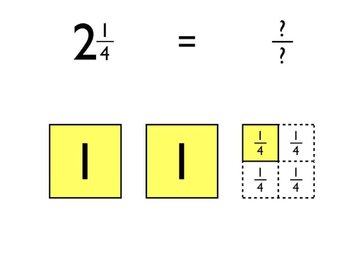I've coloured in two whole squares in yellow and then an extra one quarter of another square in yellow, as you can see. So this diagram represents that mixed number, two and one quarter. Now we're talking about quarters.